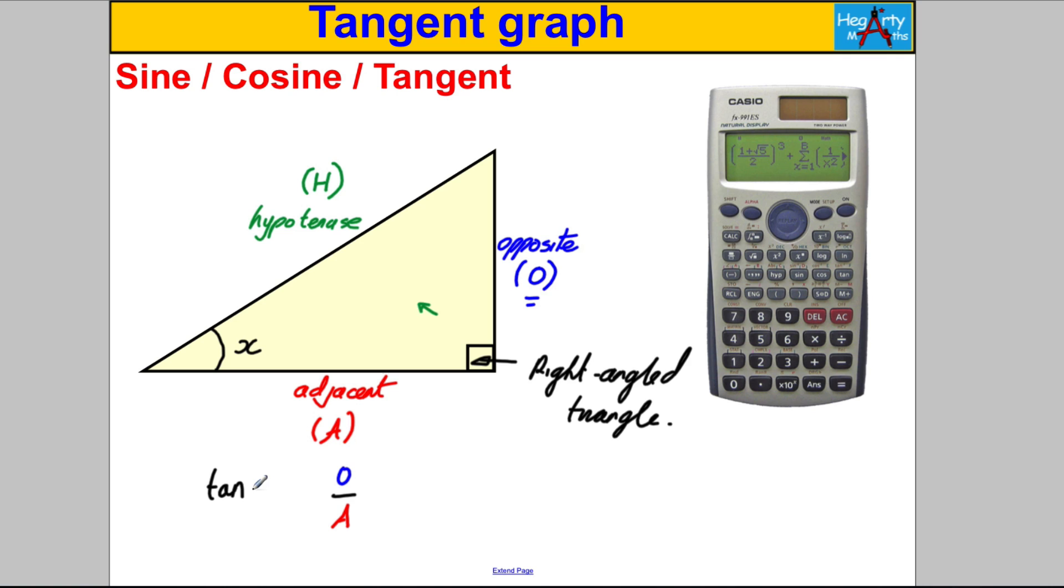The tan function, which is that button on your calculator, if you apply the tan function to whatever angle you have in this right angle triangle, this unknown angle here, it always gives you the same answer as doing the opposite side divided by the adjacent side. So let's go and try and draw this tan graph.